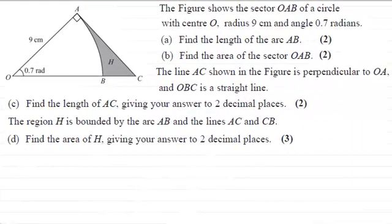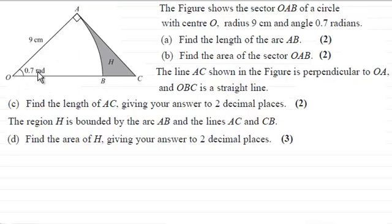Hi there. Now for this question, we're given this figure here, which shows the sector O, A, B of a circle, with centre O, radius of 9 centimetres, and an angle of 0.7 radians.